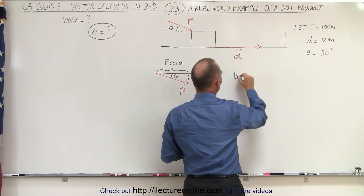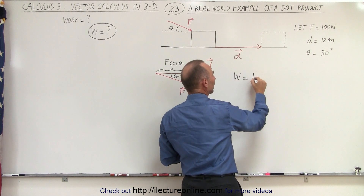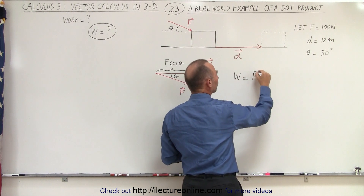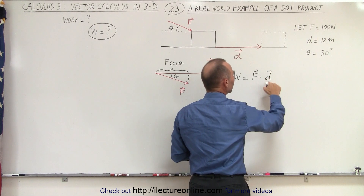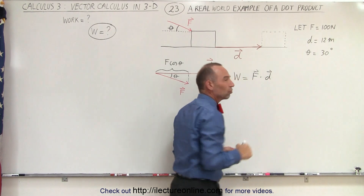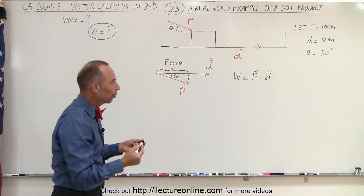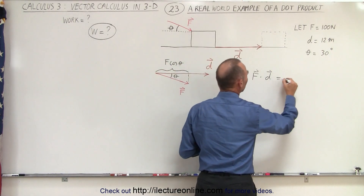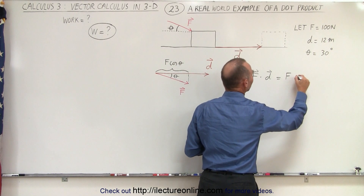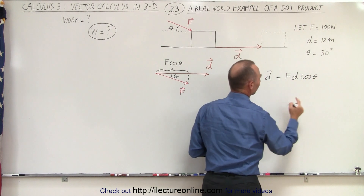The work done, which is a scalar quantity, is equal to the force multiplied by the displacement — or the distance traveled — via the dot product. And we know that is equal to the magnitude of the force times the magnitude of the displacement times the cosine of the angle between them.